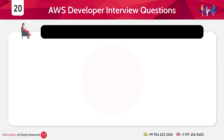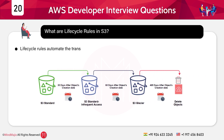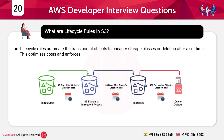Question 20: What are lifecycle rules in Amazon S3? Answer: Lifecycle rules automate the transition of objects to cheaper storage classes or deletion after a set time. This optimizes cost and enforces data retention policies.